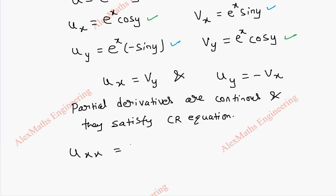Uxx is again, y is a constant, so e^x into cos y. Then uyy will be derivative with respect to y, so e^x into minus sin y derivative is minus cos y.